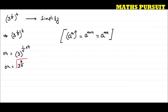To recap: when we solved 3 to the power 1 upon 5, to the power 4, we got the answer 3 to the power 4 upon 5, using the identity a to the power m to the power n equals a to the power mn.